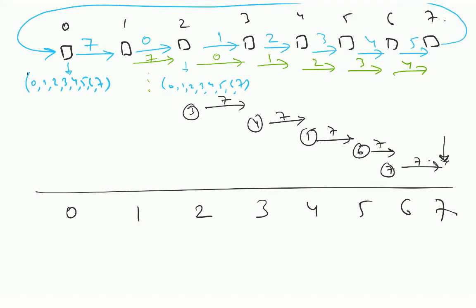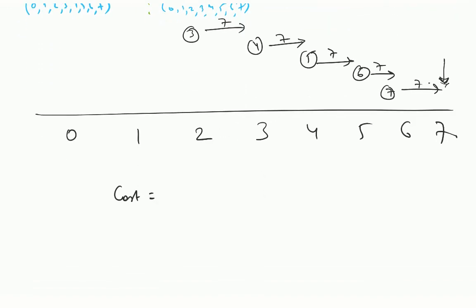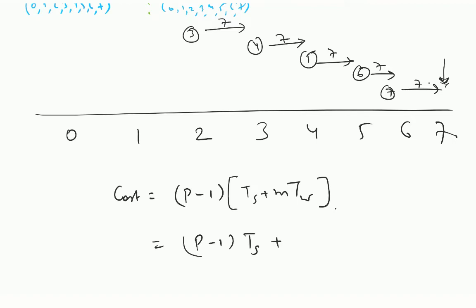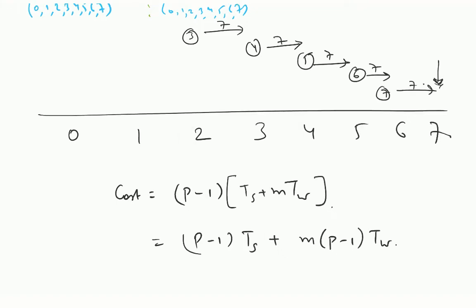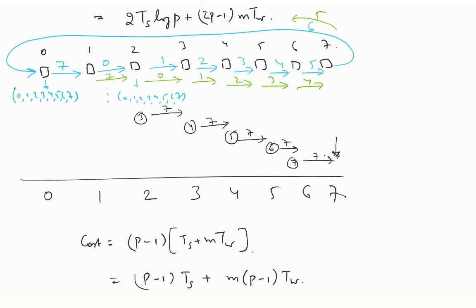Generalizing to m elements: the first m elements will reside on node 0 summed over all nodes, the next m elements on node 1, and so on. This is nothing but reduce scatter — you have done a reduce scatter. The cost: there are p−1 iterations, each of cost Ts plus m·Tw, giving a total of (p−1)·Ts plus m·(p−1)·Tw. This is the cost of what we call the ring algorithm.